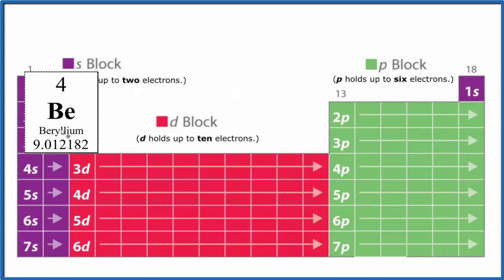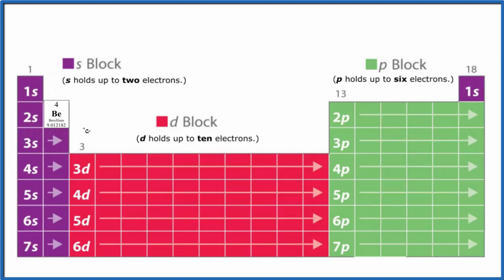So beryllium, that's right here on the periodic table, has atomic number four, four protons, but it also has four electrons. So let's write the electron configuration for beryllium.